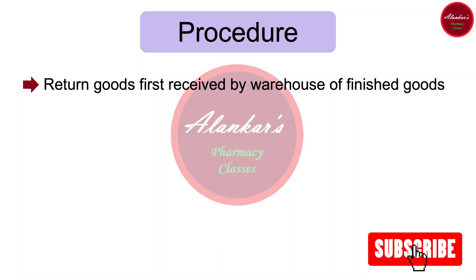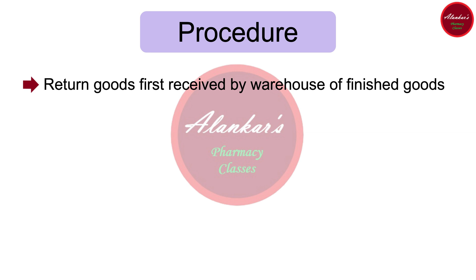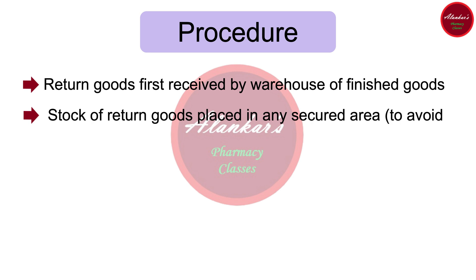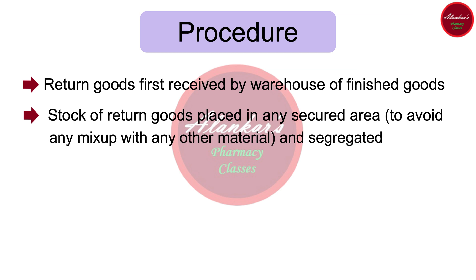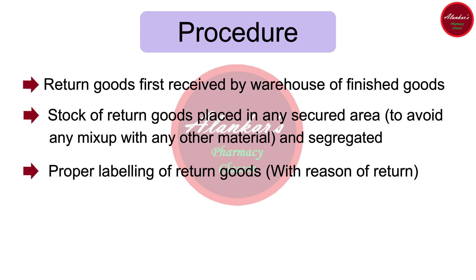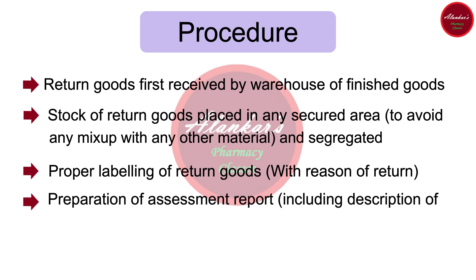The procedure followed by the pharmaceutical industry after receiving returned goods: returned goods are first received by the warehouse of finished goods, and after that the stock of returned goods is placed in a secured area so as to avoid any mix-up with any other type of material. Then there should be proper labeling of returned goods with the particular reason for return. After that, there is preparation of an assessment report which includes the description of the condition of goods.